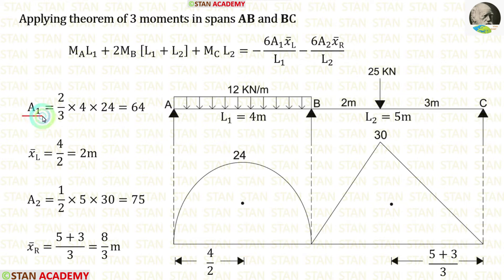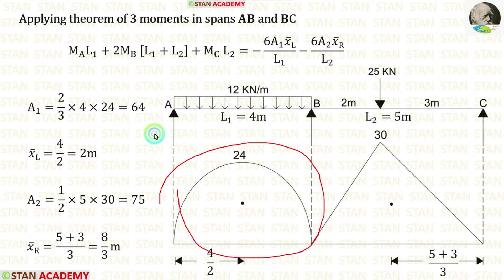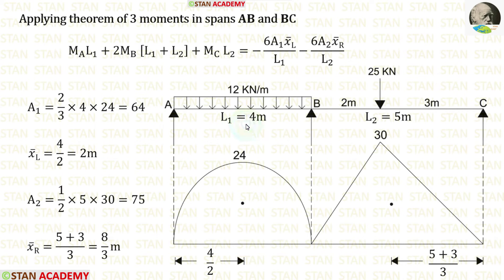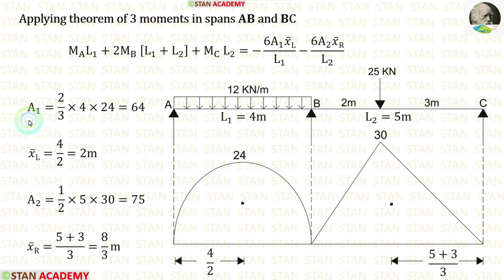Now let us apply the theorem of three moments in spans AB and BC. In this equation, we need to find area 1, x̄ left, area 2, and x̄ right. First, let us calculate area 1. We know the formula for the area of a parabola: 2/3 × breadth × height. Here breadth is 4 m and height is 24. Applying the formula, we get area 1 = 64.